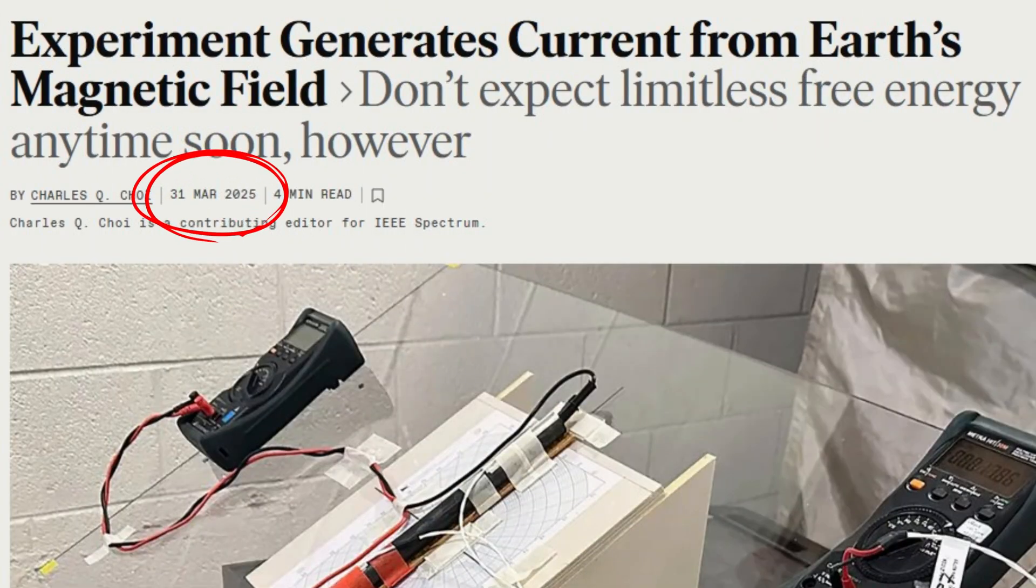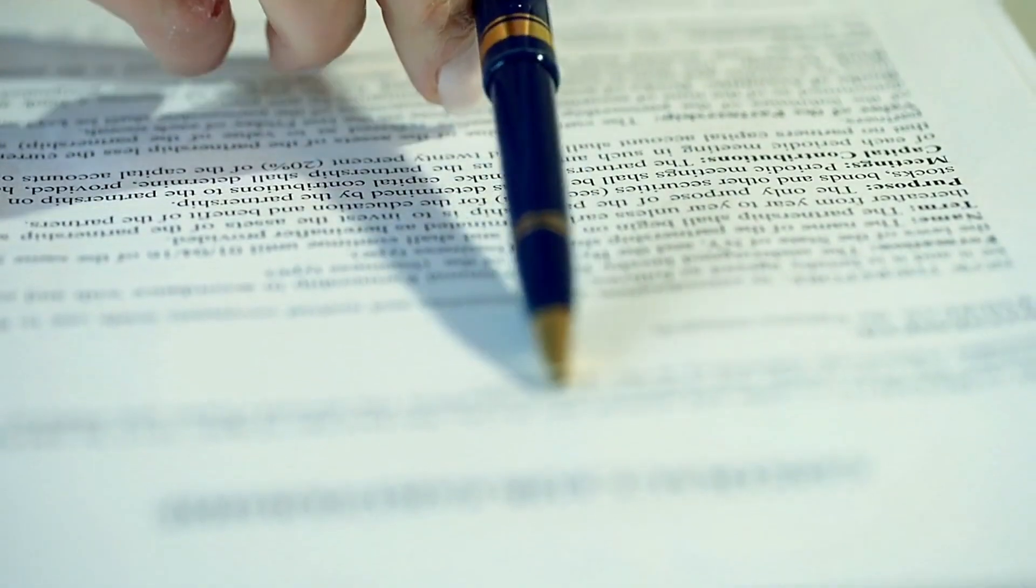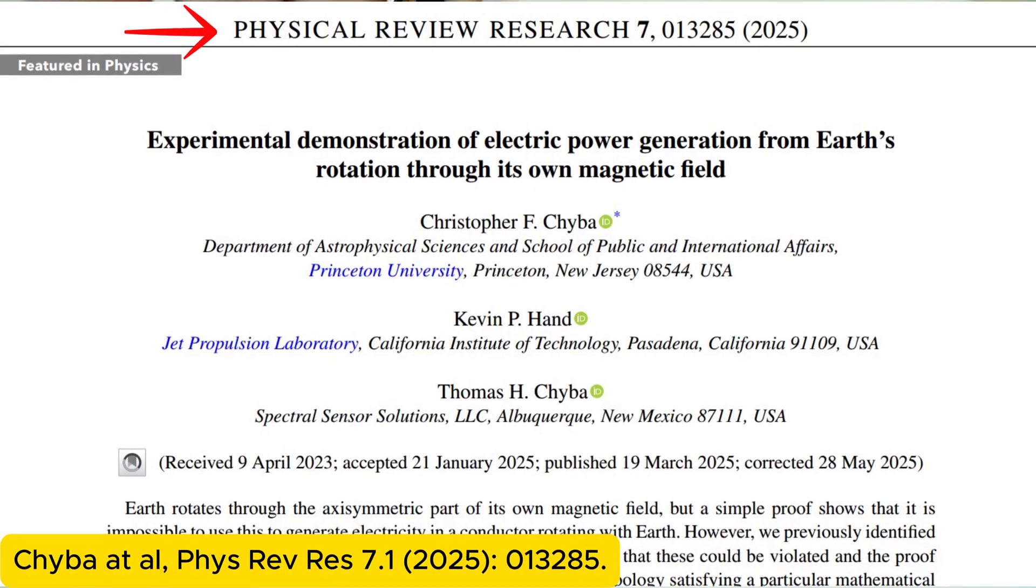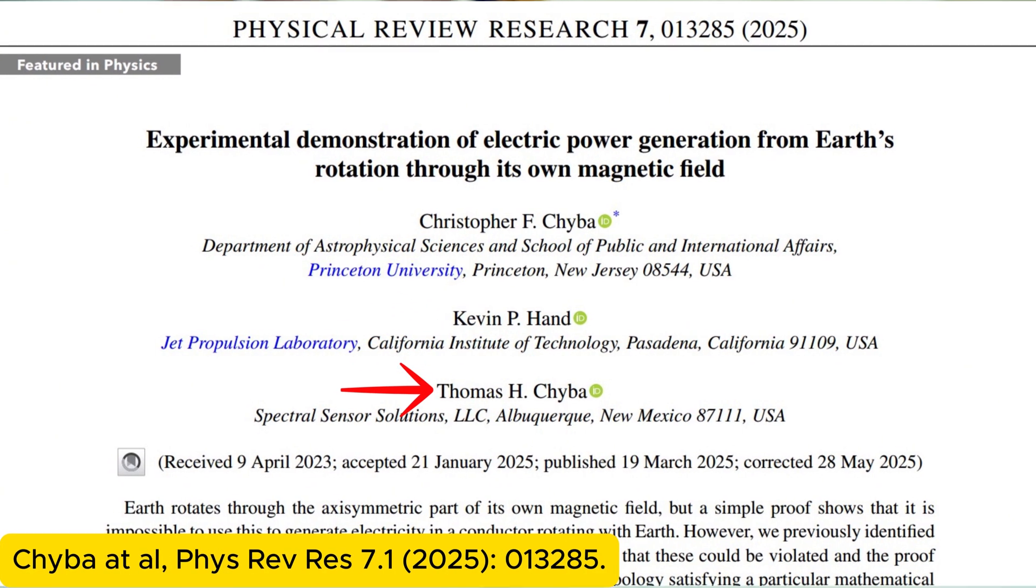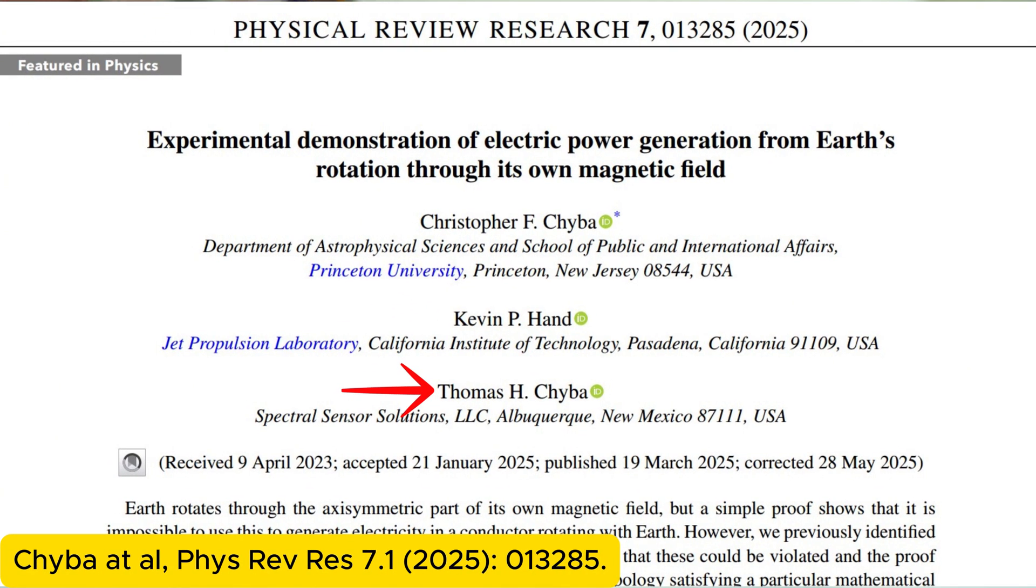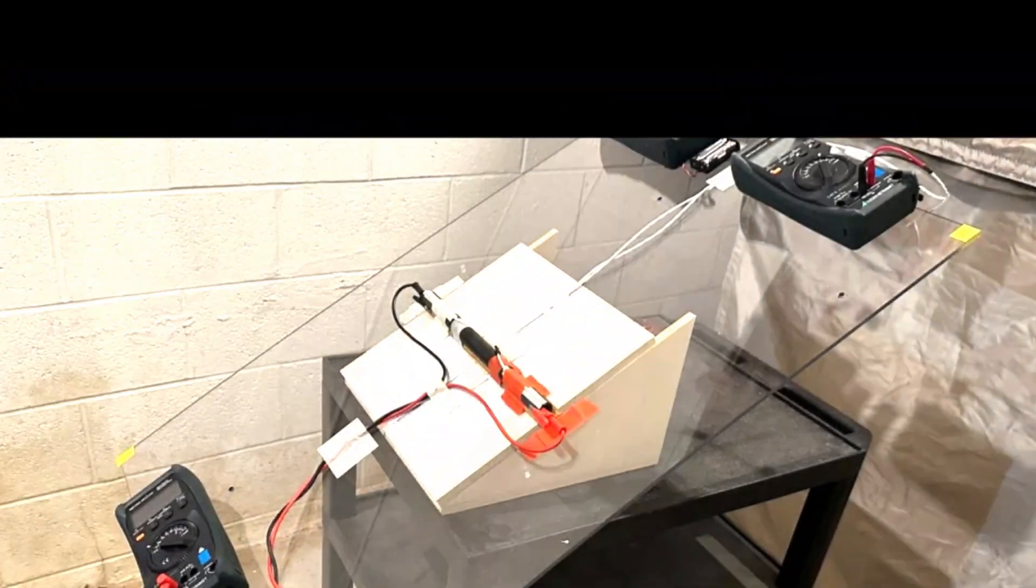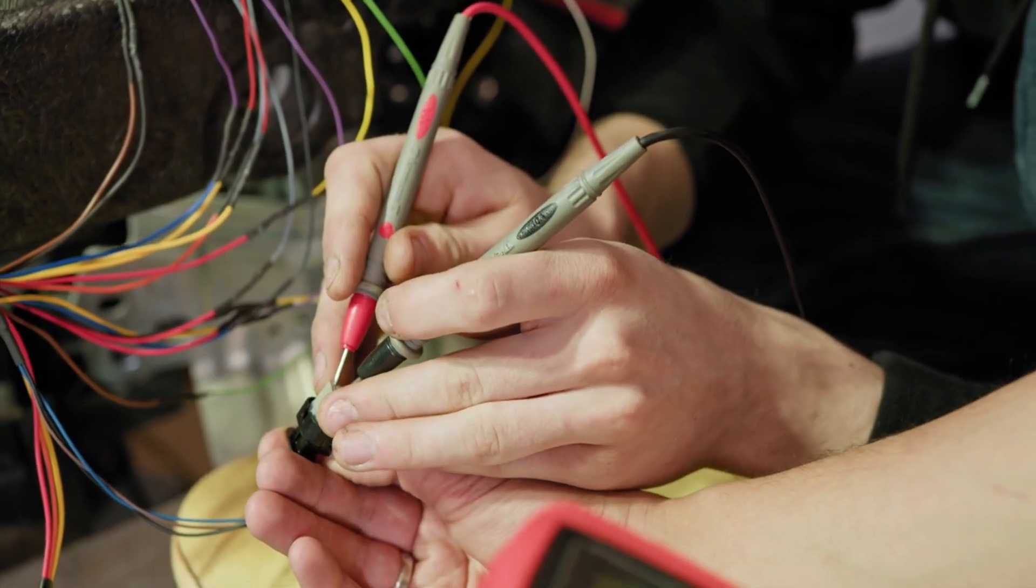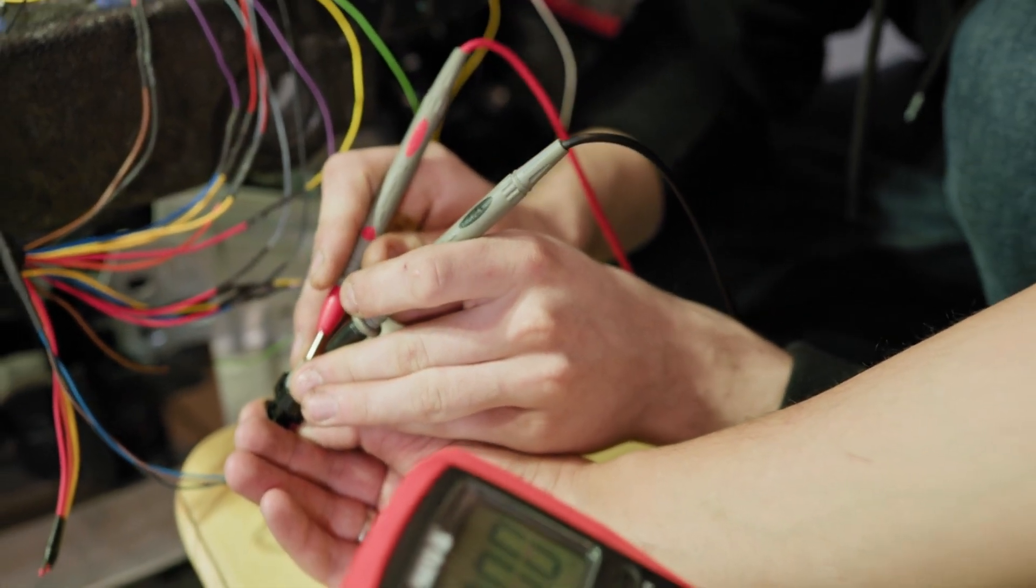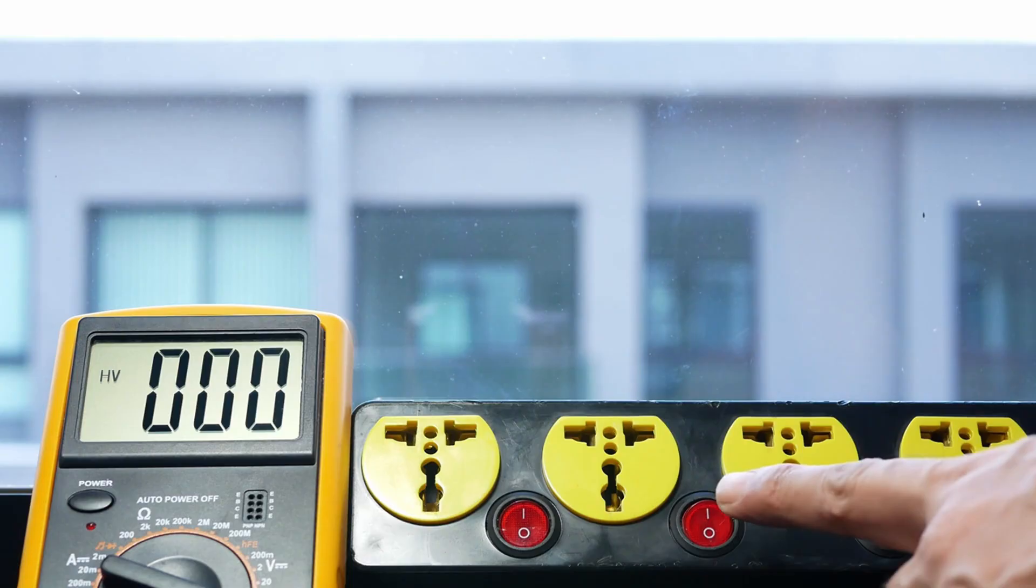But in March 2025, a peer-reviewed experiment published in Physical Review Research by Christopher Chaiba, Kevin Hand, and Thomas Chaiba overturned that assumption. They didn't just theorize it. They built a working apparatus that produced a continuous, measurable electric voltage and current from Earth's rotation.